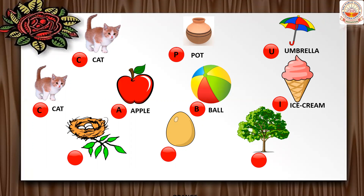The next picture is ice cream — I for ice cream. Then nest — N for nest. Then E for egg. And the last picture is a big tree — T for tree. Now form a word using the letters in the red circle.